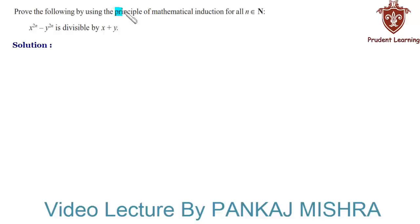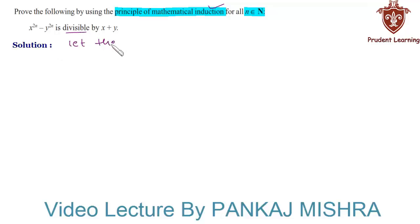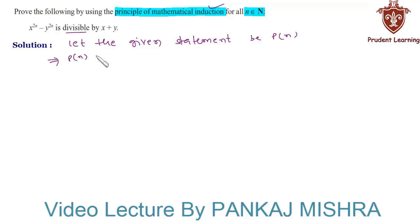Prove the following by using the principle of mathematical induction for all n belonging to natural numbers. We are given the statement: x raised to 2n minus y raised to 2n is divisible by x plus y. We are required to prove it by using the principle of mathematical induction. Let the given statement be P(n), such that x raised to 2n minus y raised to 2n is divisible by x plus y.